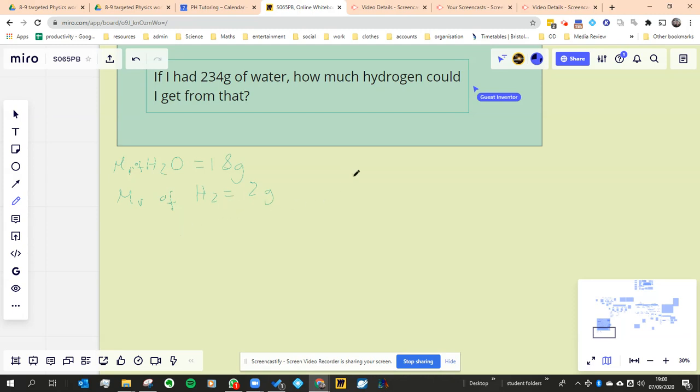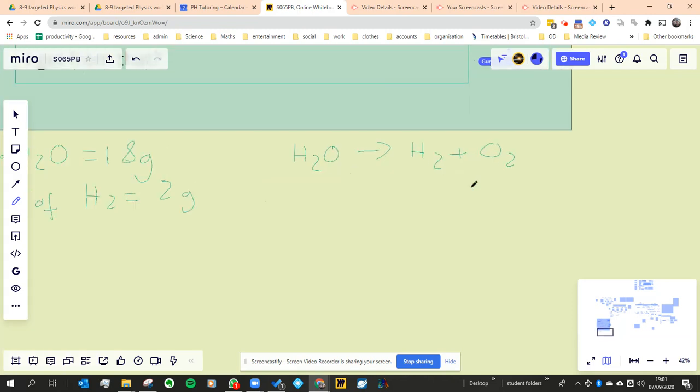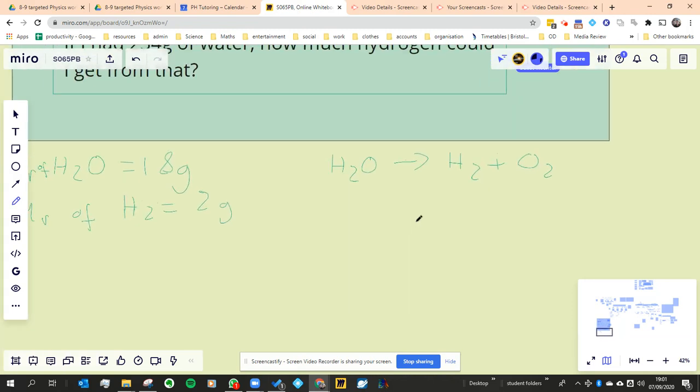The next really useful information is to write the equation that would actually happen. And so we're talking about H2O reacting to produce H2 and O2. And then we have to balance it. Because so far that equation isn't true.